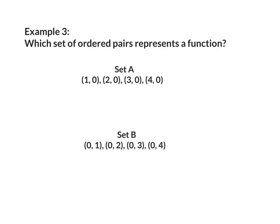Example 3. Which set of ordered pairs represents a function? In a set of ordered pairs, my X's are my inputs, and my Y's are my outputs. I'm going to circle all my inputs. I have 1, 2, 3, and 4. Since all my inputs are different, they all have exactly one output. That means that set A is a function.